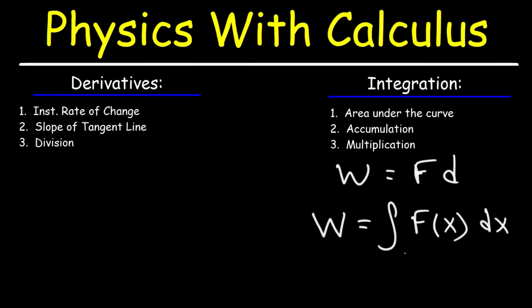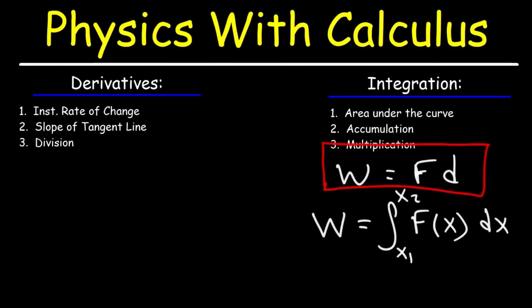You integrate from a to b, where a and b are x values — x1 is the initial position and x2 is the final position. What I want you to realize is that when a formula involves multiplying two variables, it's associated with integration. When you're dividing two variables, that formula is associated with differentiation, or derivatives.